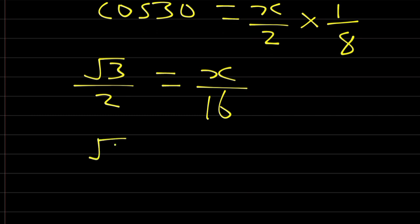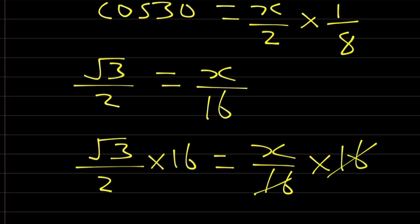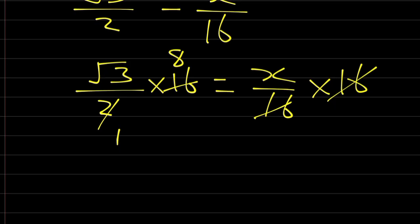Therefore, I have root 3 over 2 times 16 is equal to X over 16 times 16. 16 will cancel 16. 2 goes in 16, so I have an 8. X is now equal to 8 root 3.